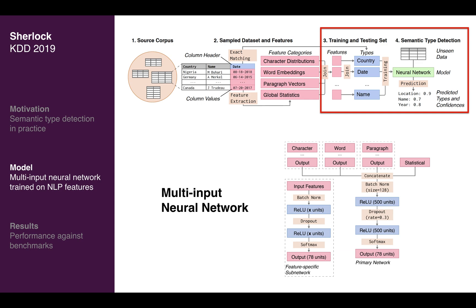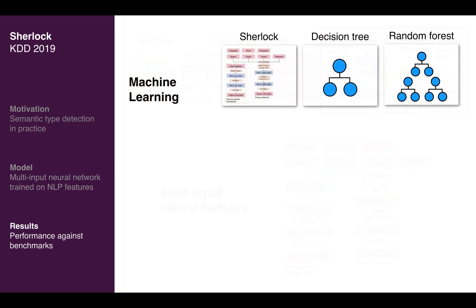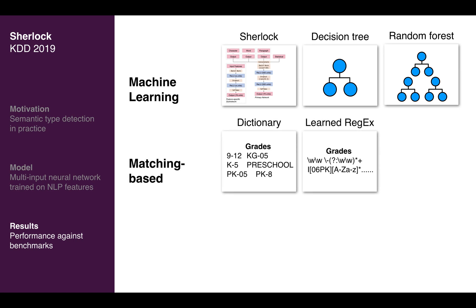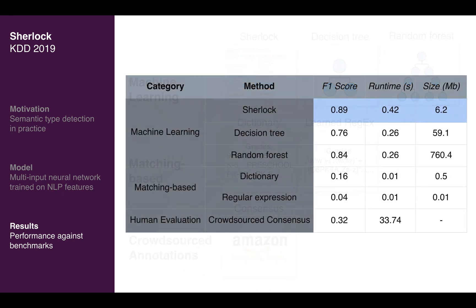We compare this network to simpler machine learning baselines, matching-based approaches typically seen in existing systems, and human annotations. We find promising differences in predictive performance of machine learning models compared to these benchmarks, with Sherlock in particular achieving a support-weighted F1 score of 0.89.